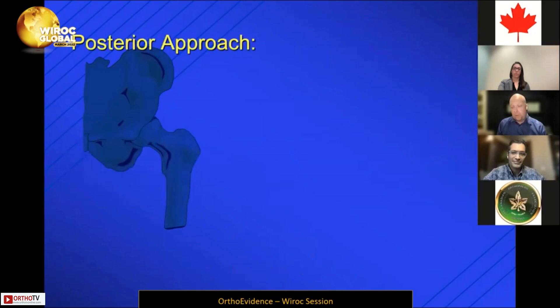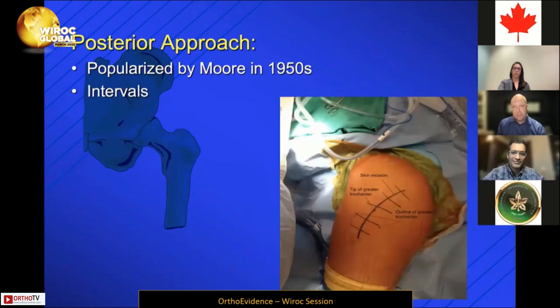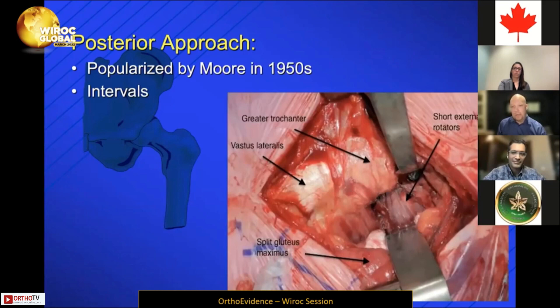Just to quickly review what we're talking about: the posterior approach is not a new thing. It's been popularized for a number of years, originally by Moore in the 1950s. Your incision is going to be centered over the trochanter and curving posteriorly. Your interval involves splitting gluteus maximus and coming down onto the short external rotators — either taking them all off or trying to maintain piriformis, depending on the approach you're using.